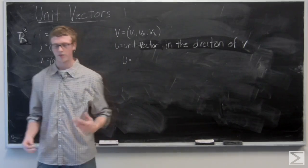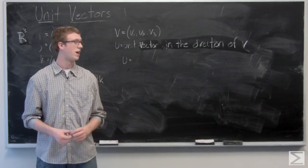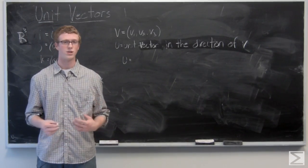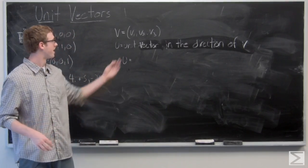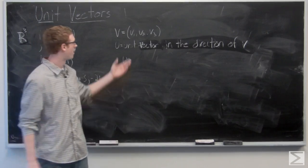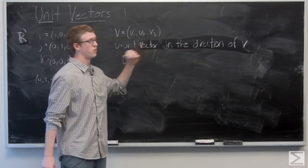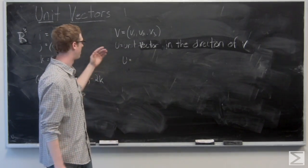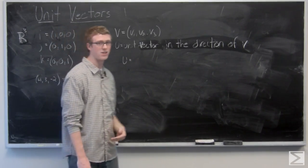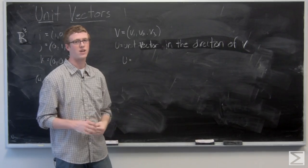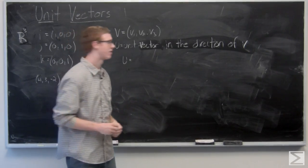Unit vectors are important because we can also find a unit vector in the direction of a certain vector that's given. So if you have vector v = (v1, v2, v3) and you want to find a unit vector in the direction of v, you simply divide v by its own magnitude or multiply by a fraction that is 1 over the magnitude.